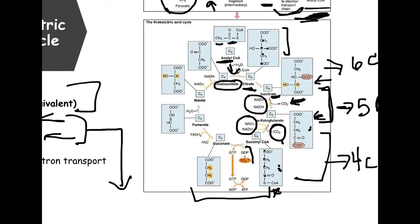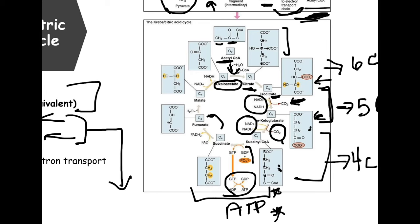This is a very important step: going from succinyl-CoA to succinate, a GTP is produced at the substrate level — an ATP equivalent. Going from succinate to fumarate, structural differences allow FAD to become reduced, picking up electrons and hydrogens to be shuttled to electron transport.